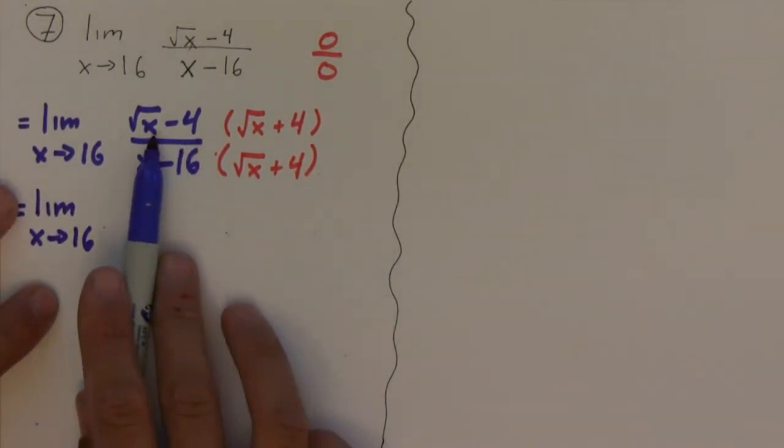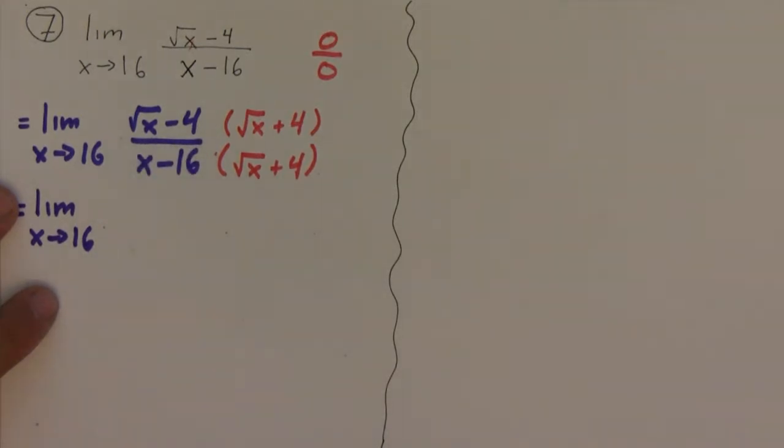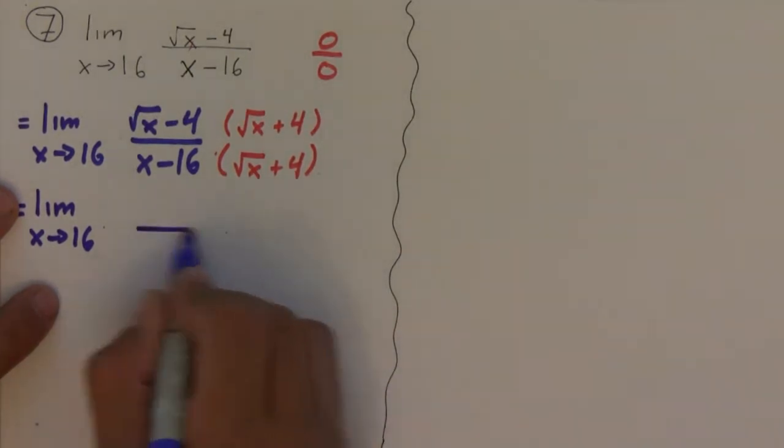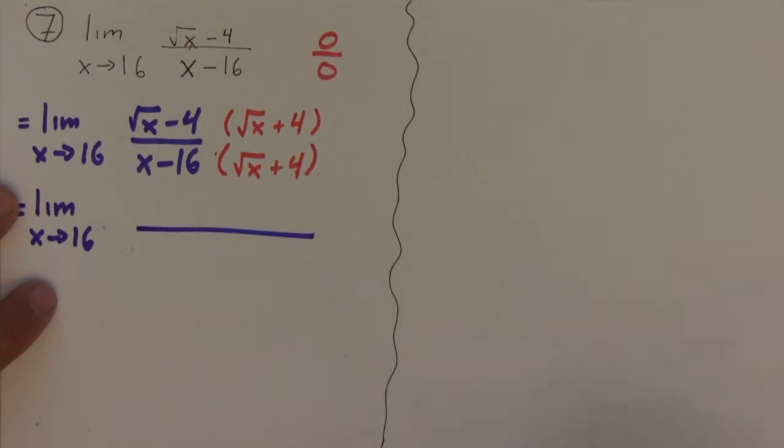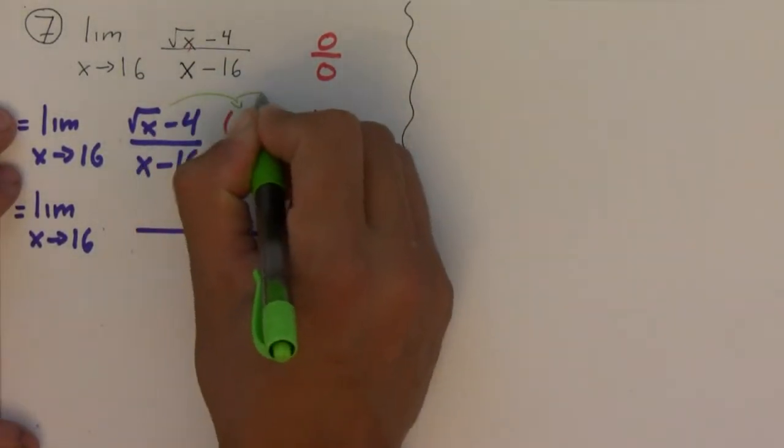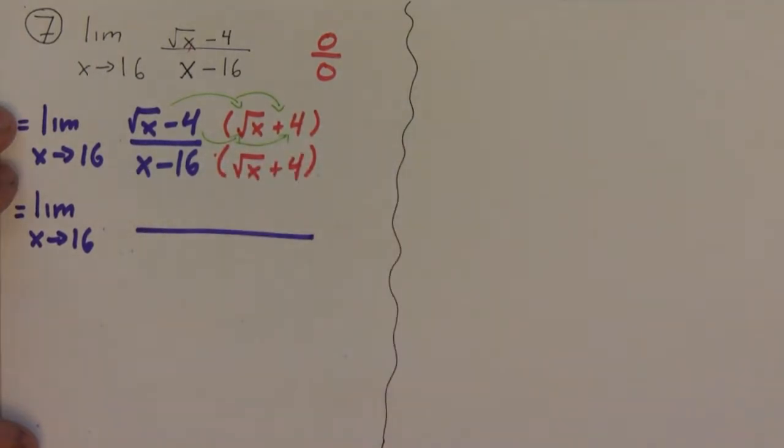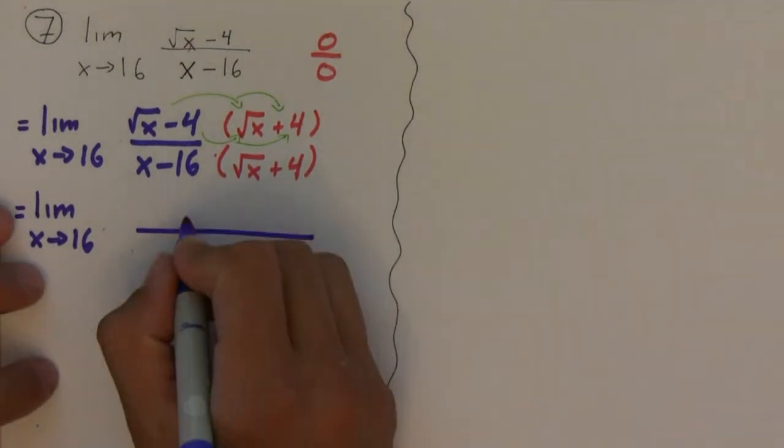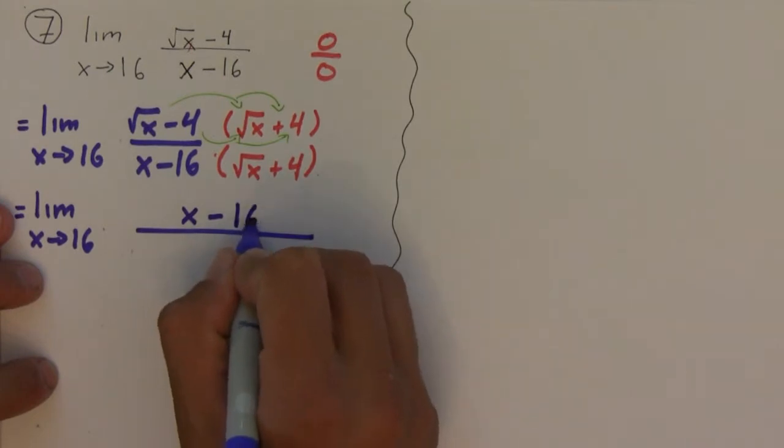FOIL with the terms that have the square root in them, and you'll see why in a minute. So take a look here. If I FOIL on the numerator, which is where I have the square root, this is actually a difference of squares and what I would get is that this is equal to, on the top, x minus 16.